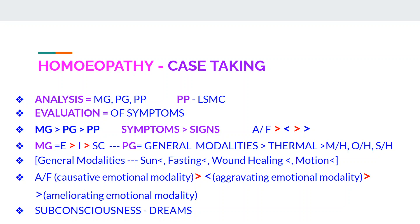General modalities — for example, sun aggravation, fasting aggravation, wound healing, and motion aggravation — are key. The ailments from causative emotional modality are most important in the case, followed by aggravating emotional modality and ameliorating emotional modality, then mental state, intellectual symptoms, and subconscious state.